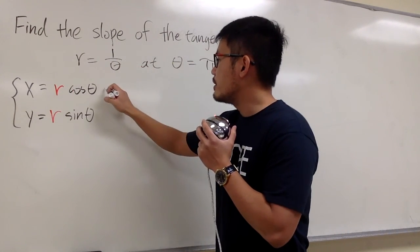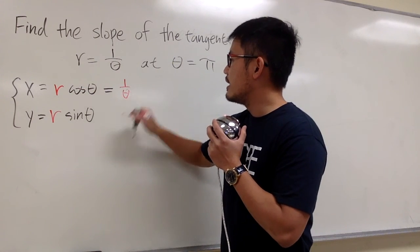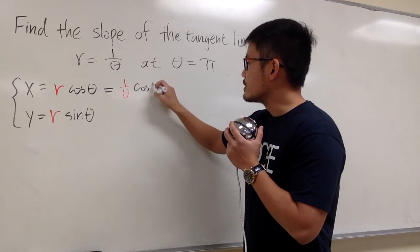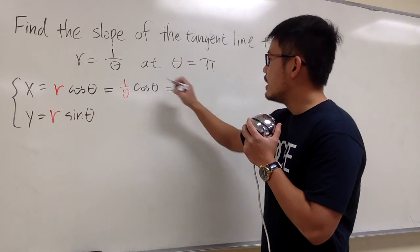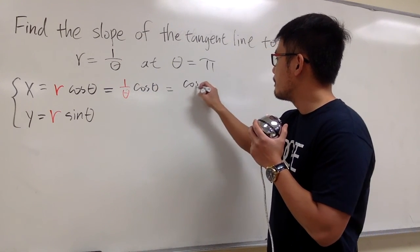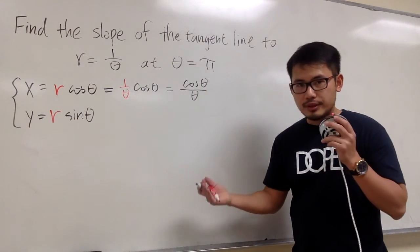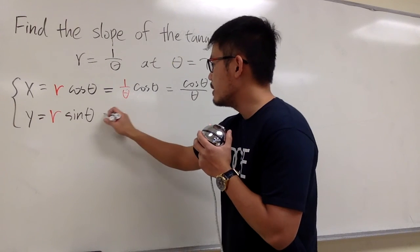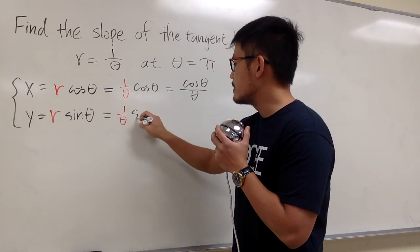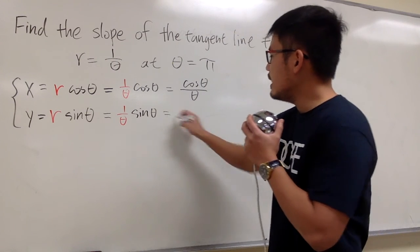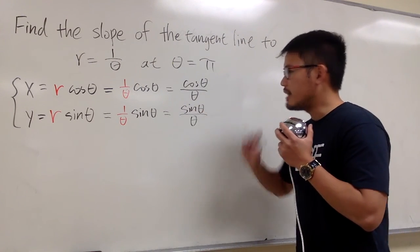So for the x equation, with r equal to 1 over theta, we multiply by cosine theta, and we can write this as cosine theta over theta. And we do the same for the y equation: r is 1 over theta, multiplied by sine theta, giving us sine theta over theta.